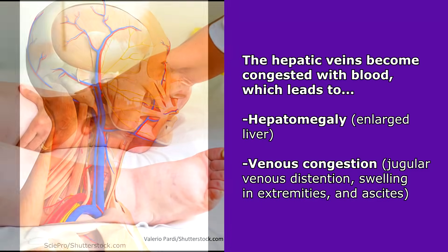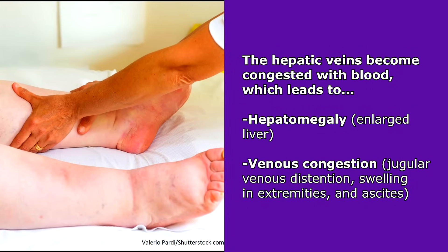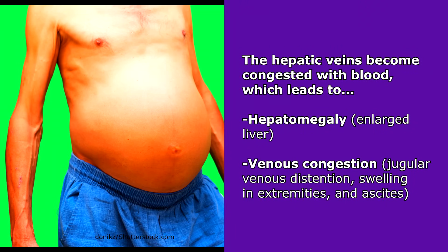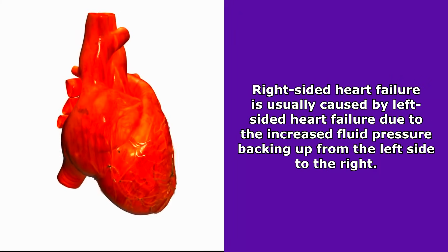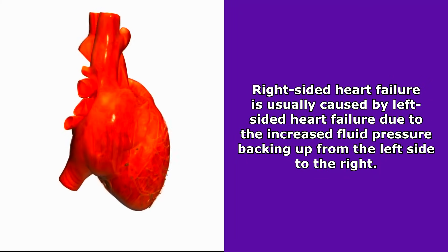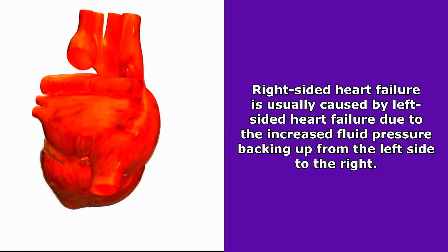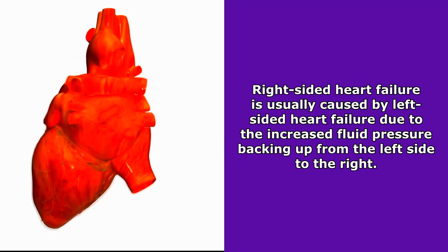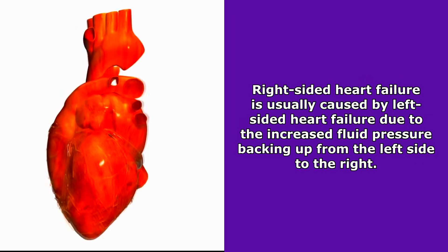And you're also going to see swelling in the extremities like the legs and the feet, along with the abdomen, which is known as ascites. And right sided heart failure is usually caused from left sided heart failure because of the increased fluid pressure backing up from the left side to the right. And this will cause the right side of the heart to become overworked.